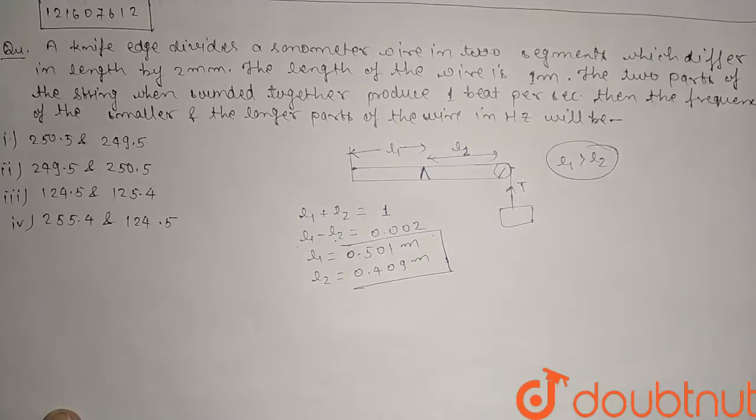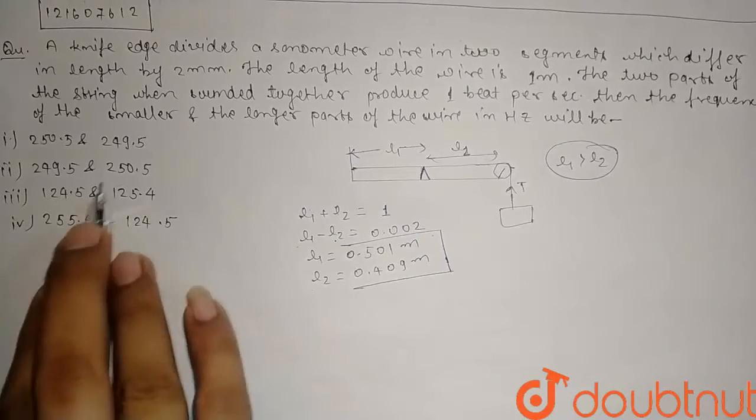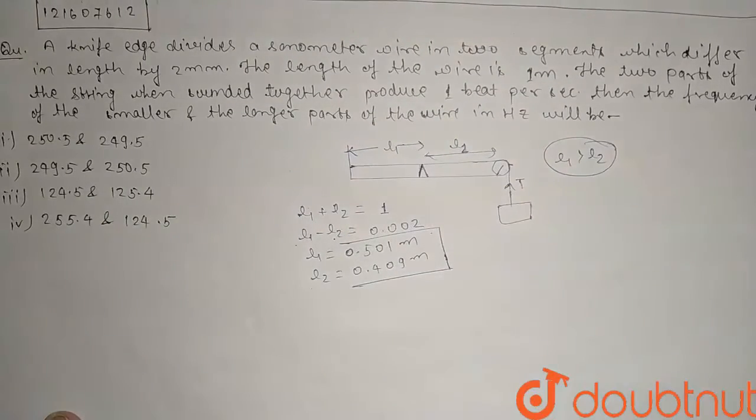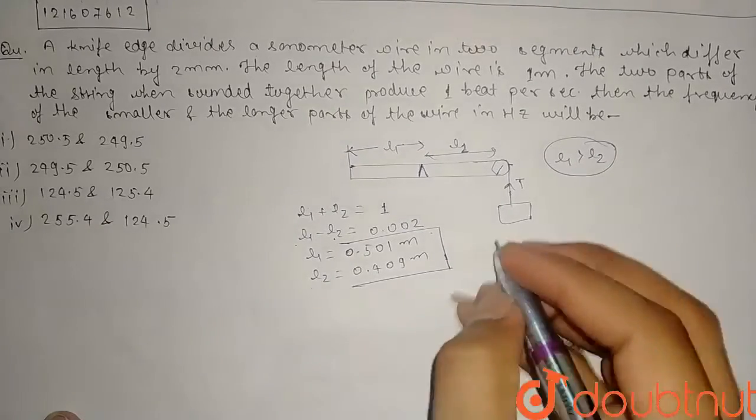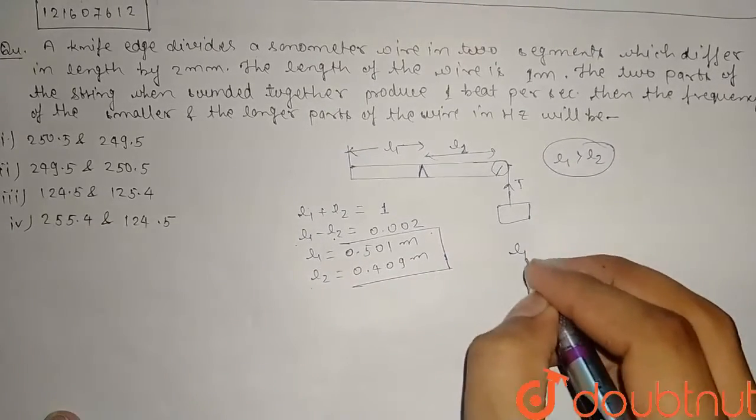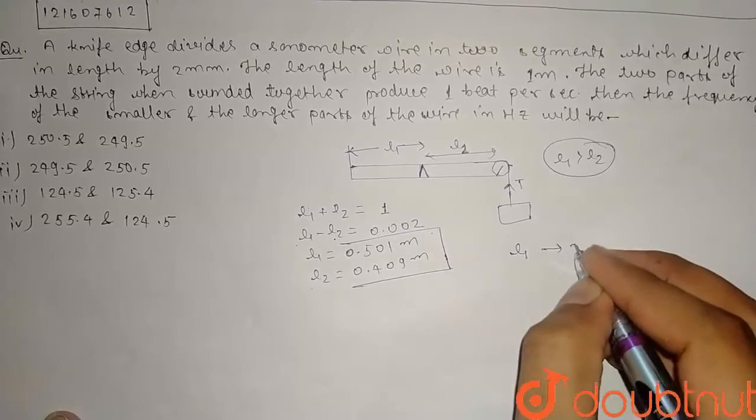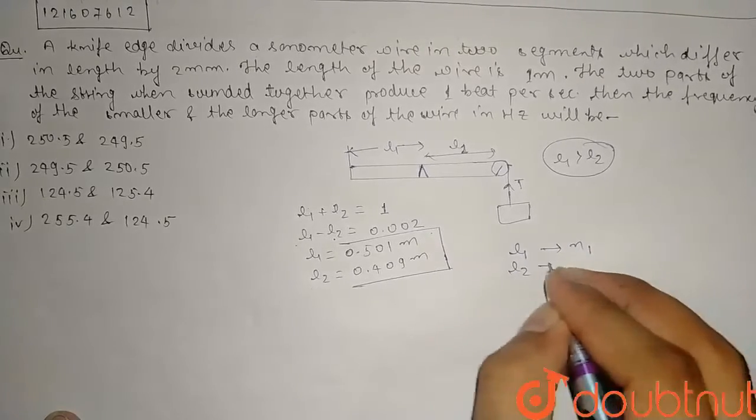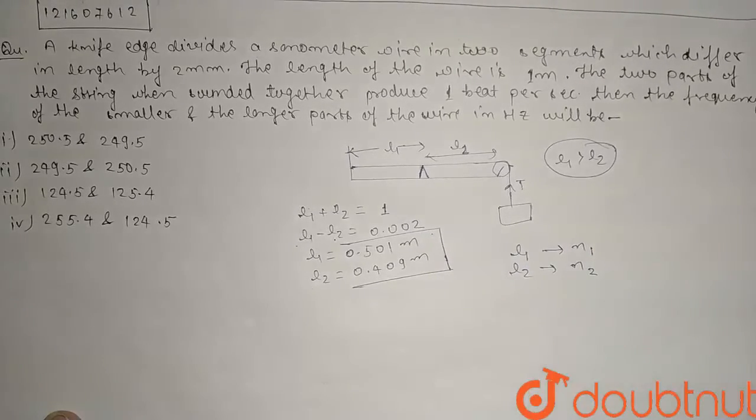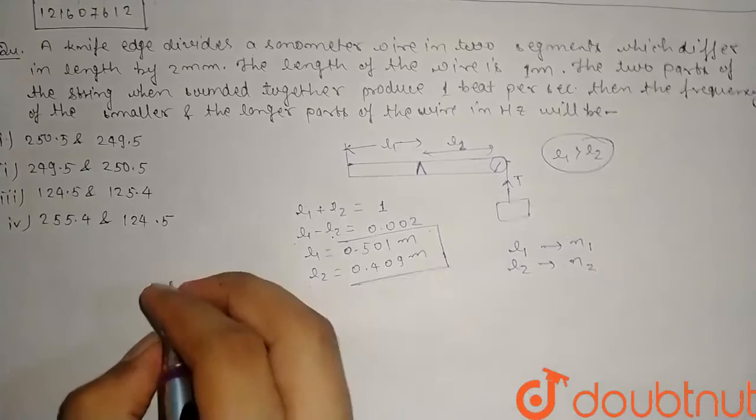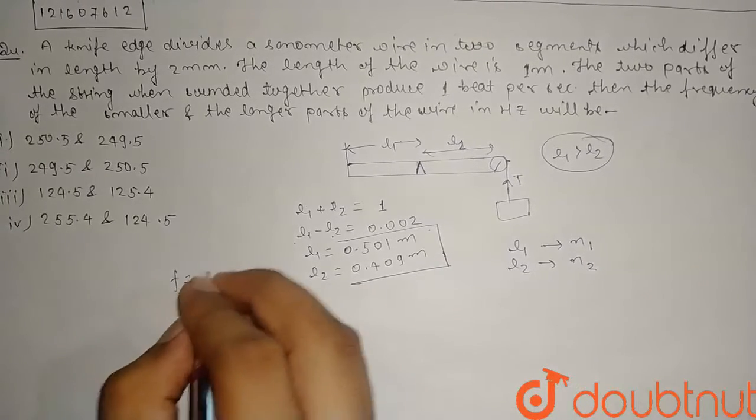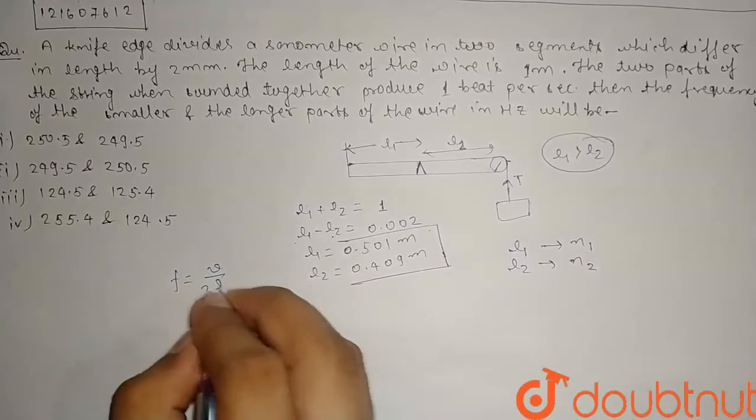Humein jo fundamental frequency ka difference wo kya hai, one beat per second ka. Yaani one beat per second. Hum logon ko milta kya, iska matlab kya? Ki agar isse, L1 ki behalf mein frequency jo hai wo kya hai? L1 ki behalf mein frequency humein N1 milti hai, and L2 ki behalf mein frequency humein N2 milti hai. To jo zyada chhota hoga, uski frequency zyada hogi. Frequency hoti hai, fundamental frequency is equal to v by 2 L.